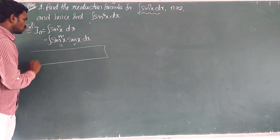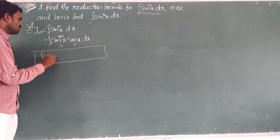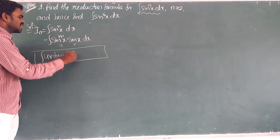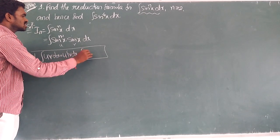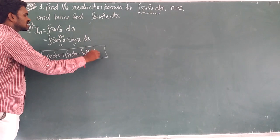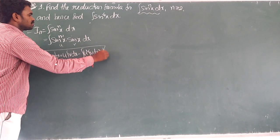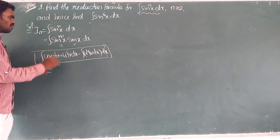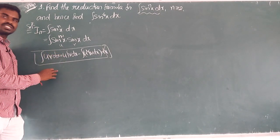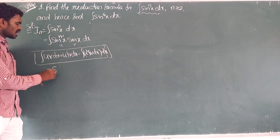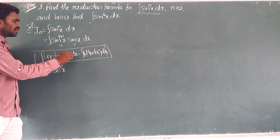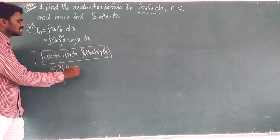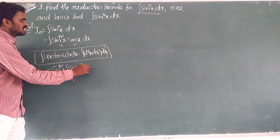For that first we have to know what is the integration of uv. The integration by parts formula is: u · ∫v dx − ∫(u' · ∫v dx) dx. So this is the integration of uv formula. Here u means sin^(n-1)(x) and v means sin(x). Integration of sin(x) dx is −cos(x).